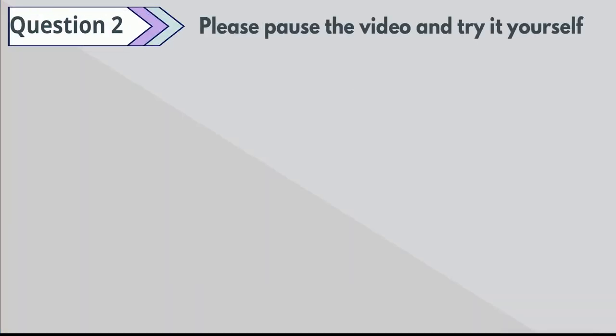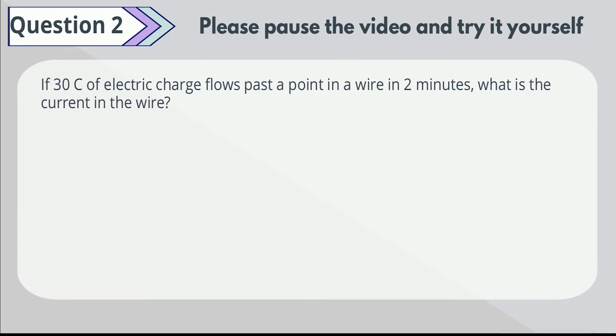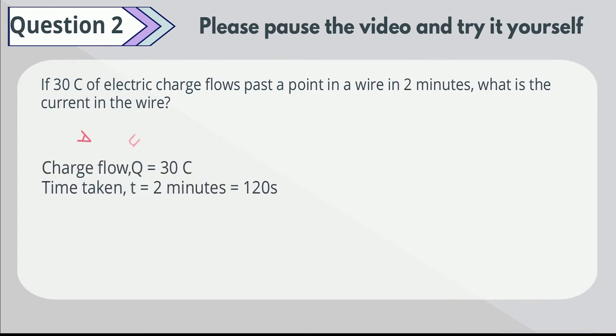Question 2. If 30 coulombs of electric charge flows past a point in a wire in 2 minutes, what is the current in the wire? Please pause the video and try it yourself. From the information given, by using I is equal to Q over t, we can calculate that the current is equal to 0.25 amps.